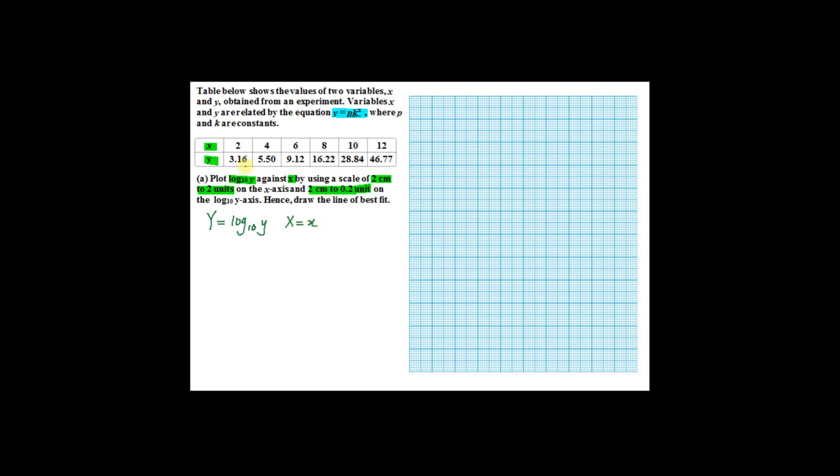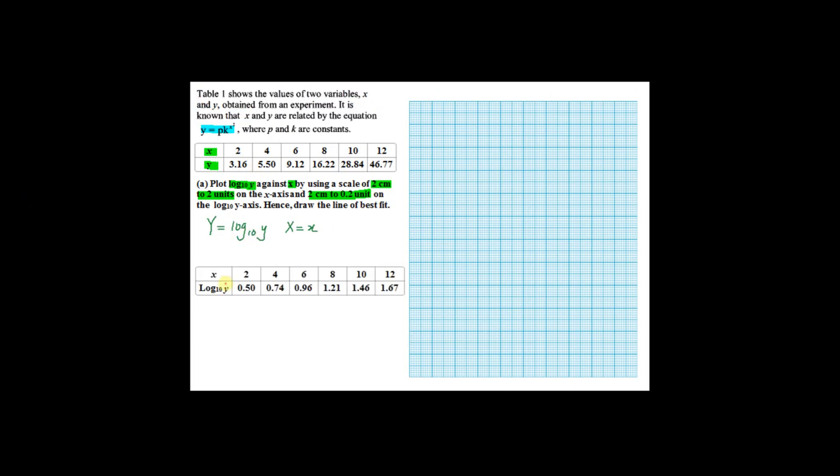First, you have to construct a table consisting of these two variables. This is the table you're supposed to construct. Here is your big X, which equals the small x. And this is your big Y, which equals log base 10 y. So your x is 2, 4, 6, 8, 10, and 12.